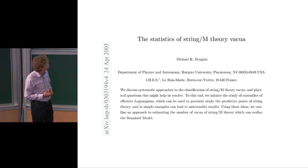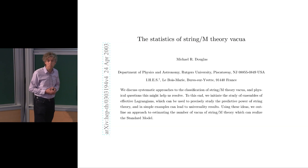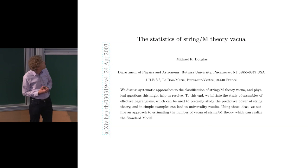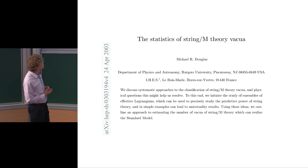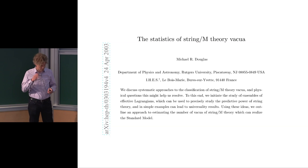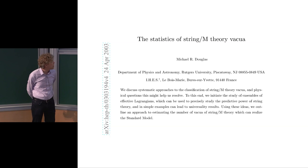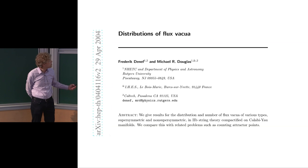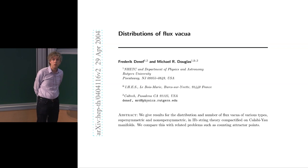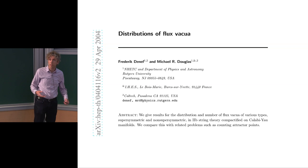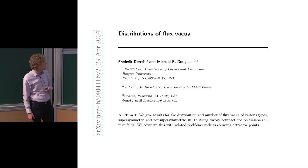Two years later he wrote this paper which set out a vision for the field. It says we initiate the study of ensembles of effective Lagrangians. The next year with Denef he gave results for the distribution and number of vacua in flux compactifications of type 2B string theory, which is the topic today.